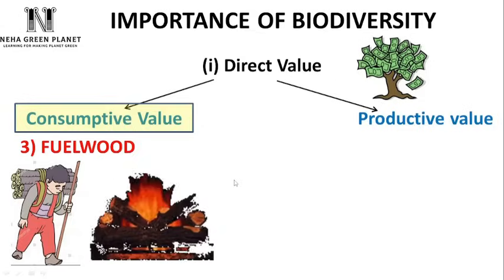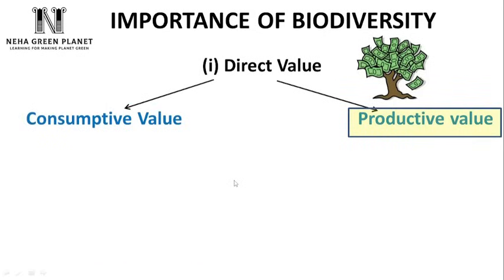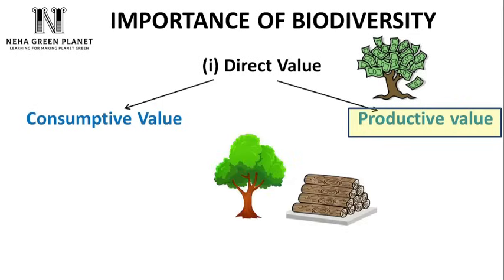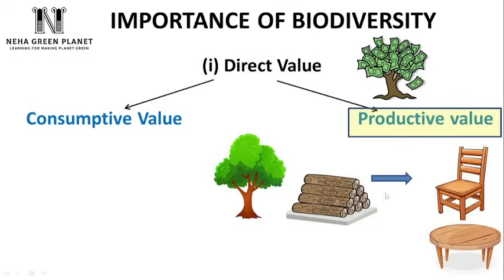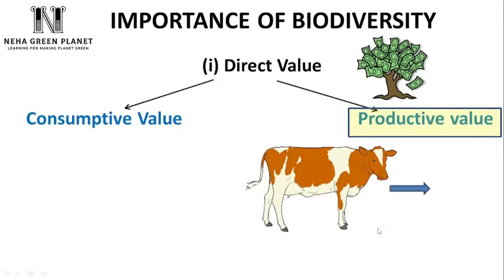The second type of direct value is productive value — substances obtained from nature and then converted into a commodity or product with monetary value. For example, timber plays a very important role in manufacturing furniture like chairs and tables. Those products can be sold in the market with a price tag. Similarly, from a cow we extract milk, which is sold in the market — that comes under productive use value.